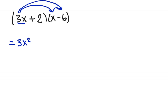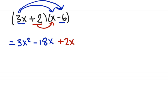Now take 3x times the second term — notice we include the negative with the 6. So we have 3x times negative 6, which is negative 18x. Next we're going to distribute the positive 2, the second term in the first parentheses. 2 times x is positive 2x, and 2 times negative 6 is negative 12.